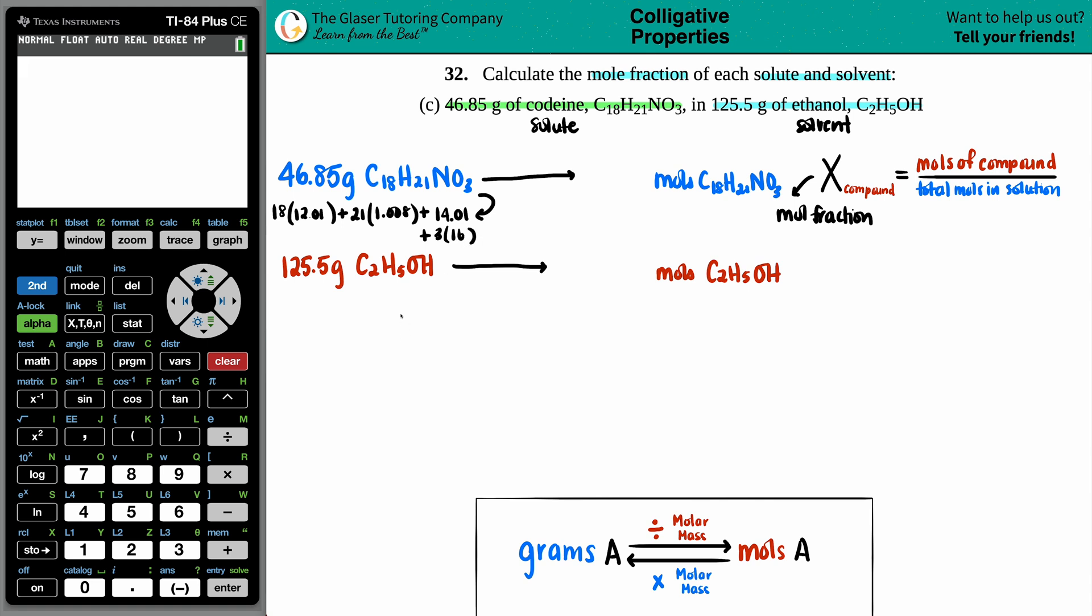Then we're going to add one more which is the three oxygens, and that's an even 16. So let's see: 18 times 12.01 plus 21 times 1.008 plus the 14.01 plus three times 16. In good faith we have 299.358. So I'm just going to take that and divide by that number, divide by 299.358. 46.85 divided by that answer and I get roughly 0.1565.